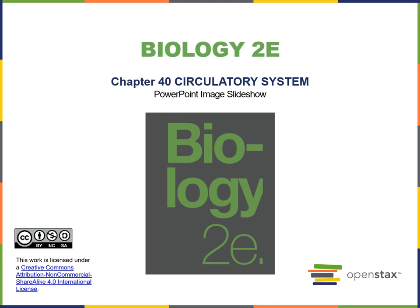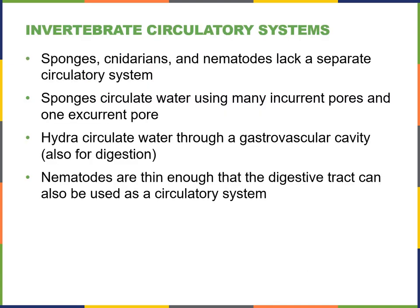Bio 100, Chapter 40, Circulatory System. The beginning of your chapter talks about different circulatory systems. We are human biology, so we care most about human biology, so I will briefly touch on some of these systems and how they differ from ours, but it's not going to be the main focus of this lecture or really of this chapter for us.